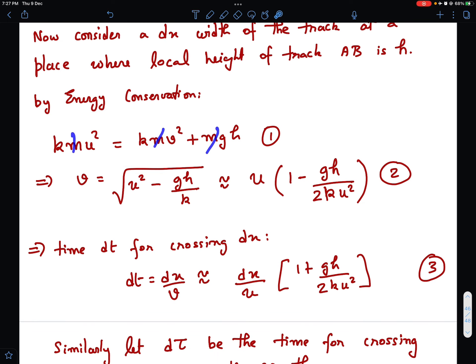If you rearrange this equation, you can cancel M everywhere and divide by k. Then you get the speed at that section as u·√(1 - gh/(2ku²)). I can take u common outside and then it becomes 1 minus something small, and then you can use binomial approximation. Power half becomes this.